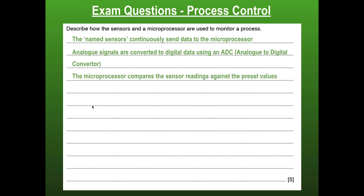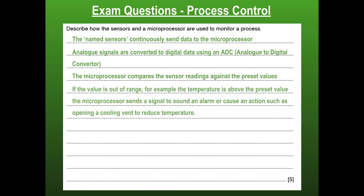The microprocessor — our boss — will then compare the sensor readings against the preset values. Something has been programmed; the limits have been set. If the value is out of range — for example if temperature is greater than 23 degrees — the microprocessor will send a signal to sound an alarm or cause an action. It could alarm for somebody to make that action, or it could open a vent that reduces the temperature. The microprocessor compares the value; the microprocessor sends the signal. The sensors do not do this. The most common mistake is saying the sensor realizes or compares the value — no, the microprocessor does it all.